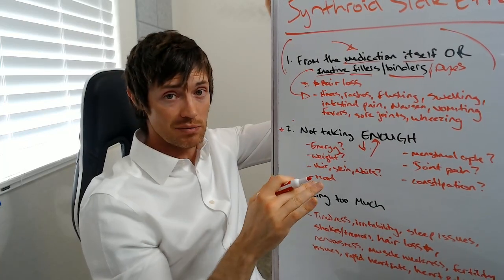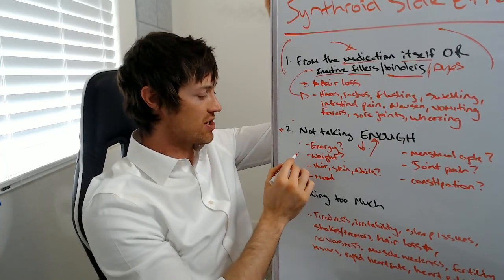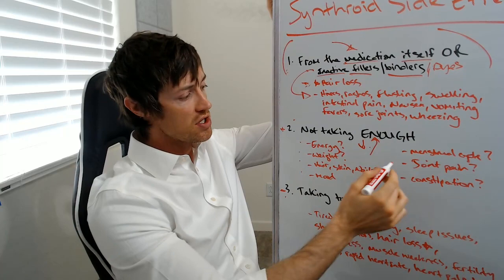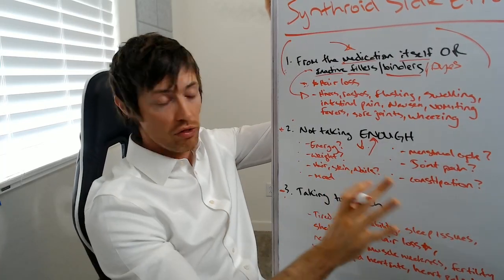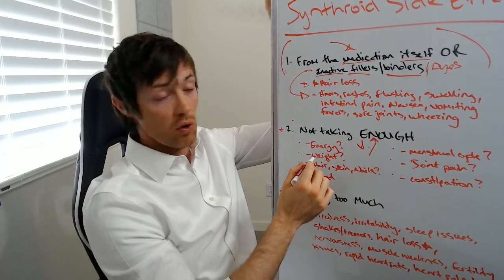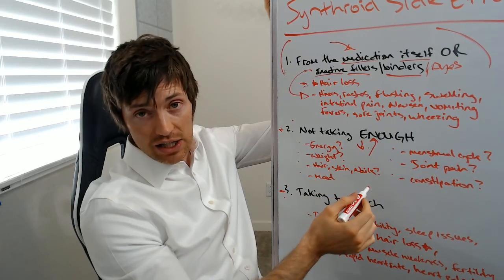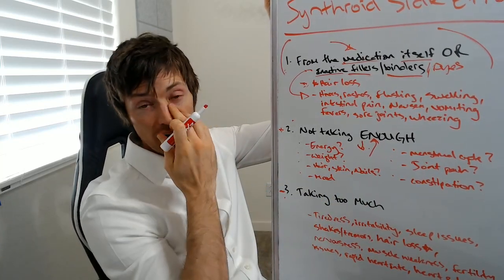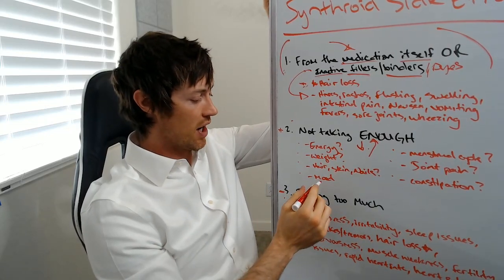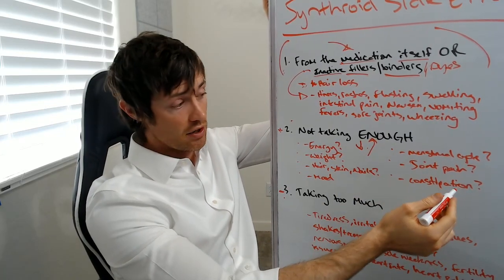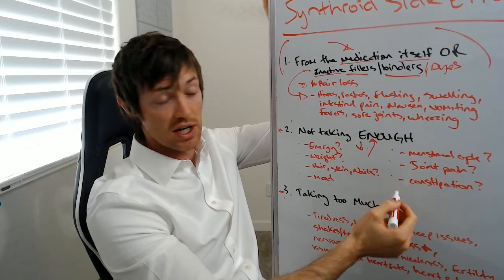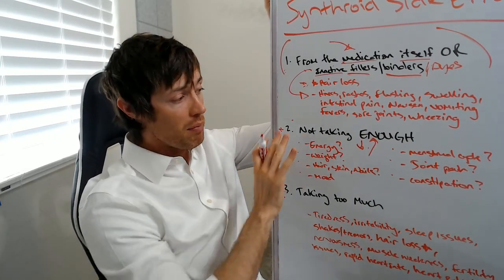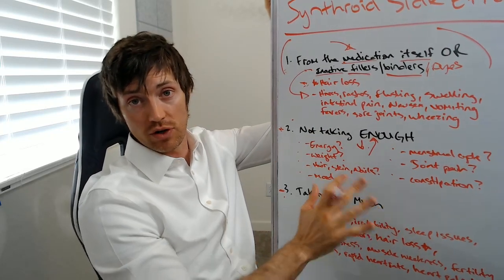As you take any thyroid medication, Synthroid included, I want you to ask yourself some of these questions. These are common symptoms of having low thyroid function. So low energy, weight gain, hair, skin, and nail issues. Hair loss, skin issues, and then also breaking or brittle nails. You can have changes to your mood, like depression. You can have menstrual irregularities or infertility. You can have joint pain and you can have constipation. So you probably already had those things before you started Synthroid.